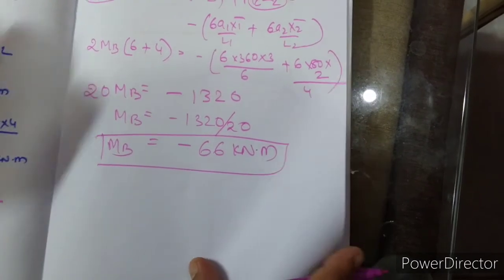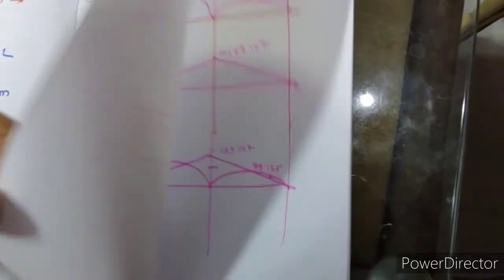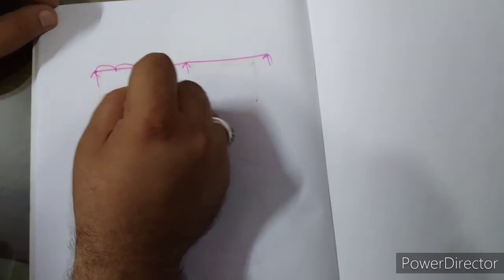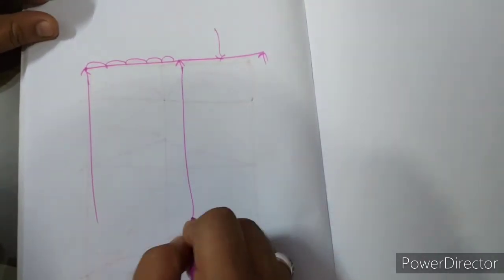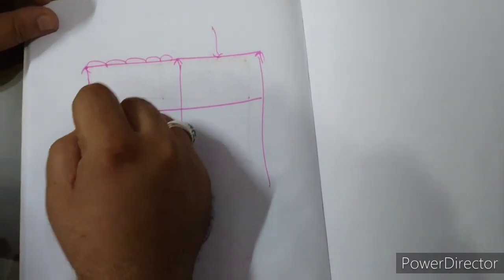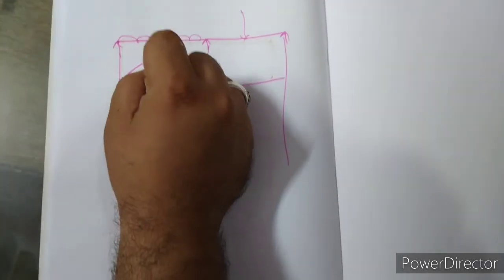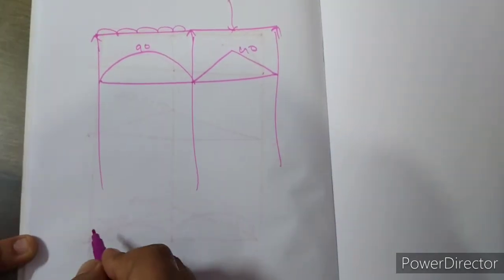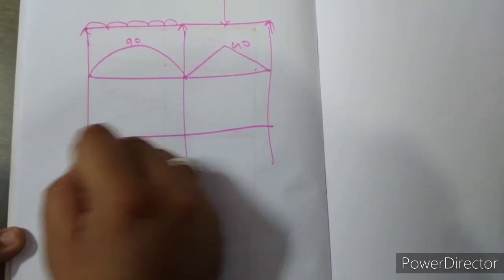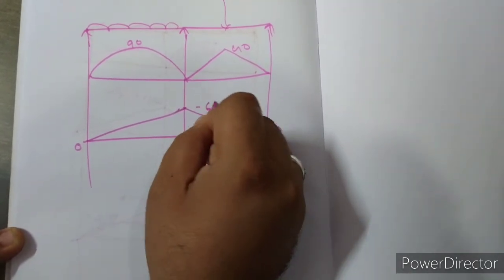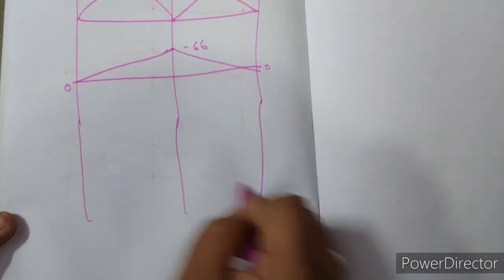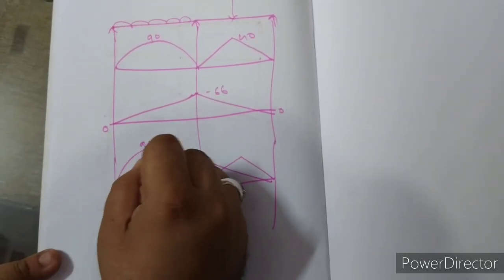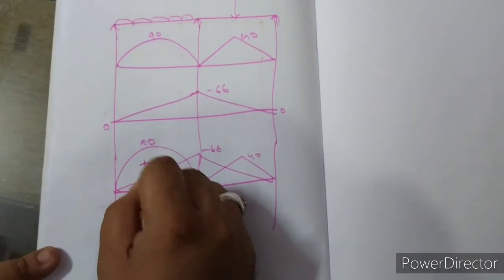अब diagram बनाएंगे. Step 1: पहले पे UDL है, parabolic curve 90 का. दूसरे पे point load है, equilateral triangle 40 का. Step 2: MB = minus 66, MA और MC दोनों 0. Step 3: combination of first two — 90, minus 66, और 40. Plus, minus, plus. That's all.